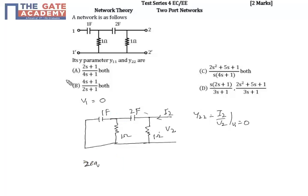So when we calculate z-equivalent, first this capacitor is in parallel with one ohm resistor. So that expression for impedance is 1 by s into 1, which is 1 by s, divided by 1 plus 1 by s.